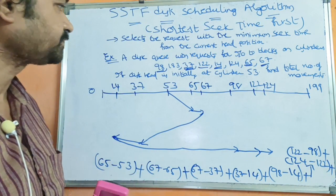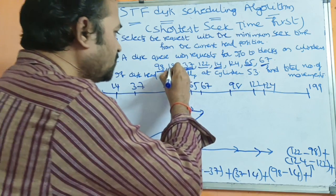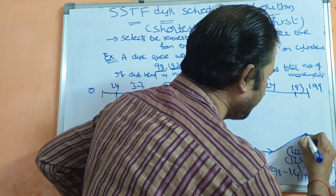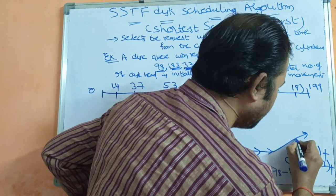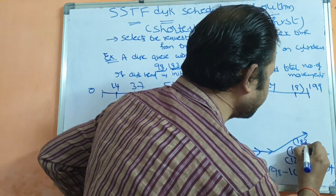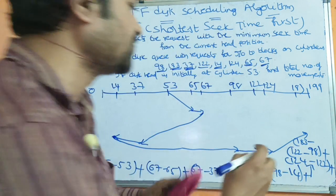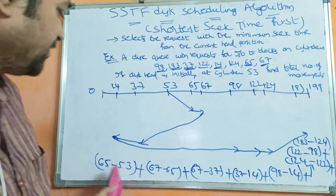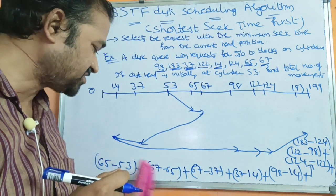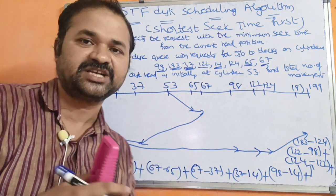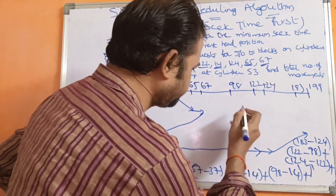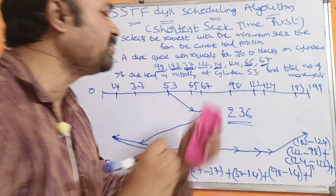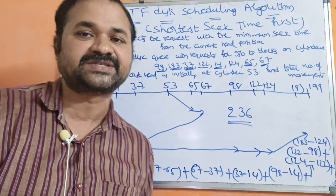The last remaining cylinder is 183. From 124, we move to 183. The movement is 183 minus 124. Adding up all the head movements, the total number of head movements required is 236.